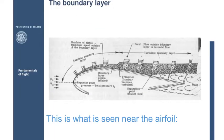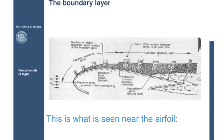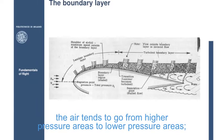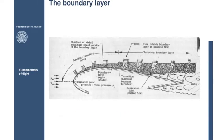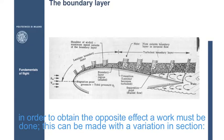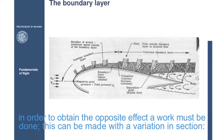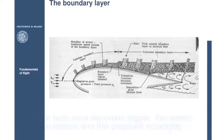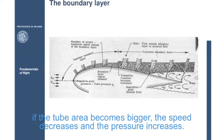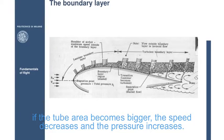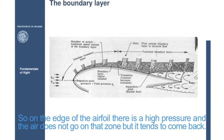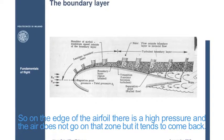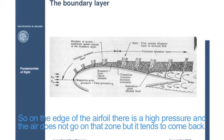This is what is seen near the airfoil. The air tends to go from higher pressure areas to lower pressure areas. In order to obtain the opposite effect, a work must be done. This can be made with a variation in section. If the tube area becomes bigger, the speed decreases and the pressure increases. So, on the edge of the airfoil, there is a high pressure, and the air does not go on that zone, but it tends to come back.